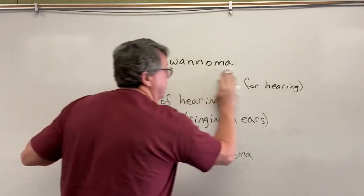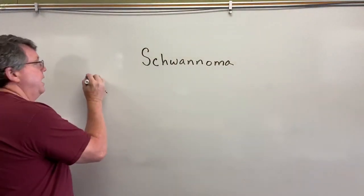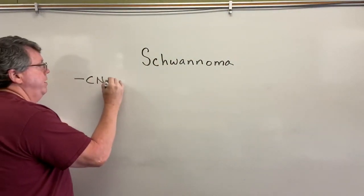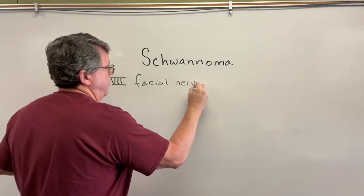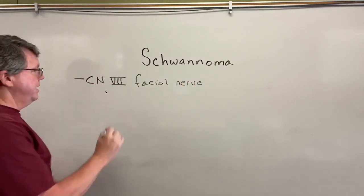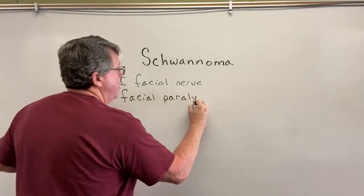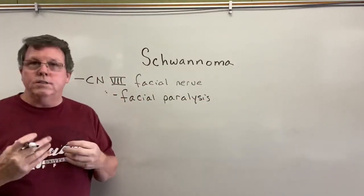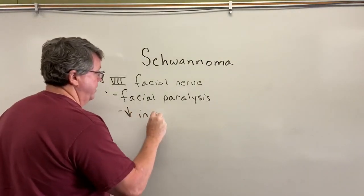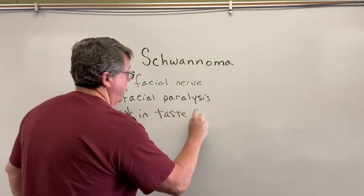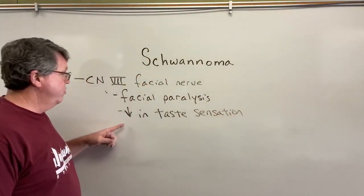Not only can it affect cranial nerve number eight — this can affect other areas of the body too. Let's say it affects cranial nerve number seven, which is the facial nerve. What can happen here is you could actually get facial paralysis. The facial nerve also handles taste to the anterior two-thirds of the tongue, so you may have a decrease in taste sensation. You can also actually get growths on your tongue.